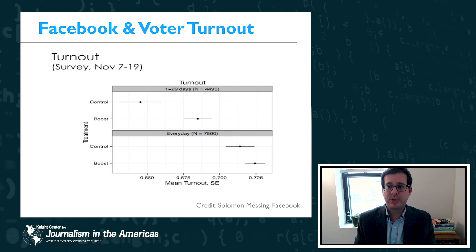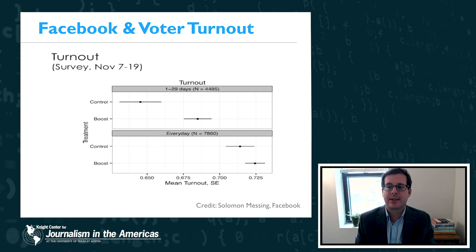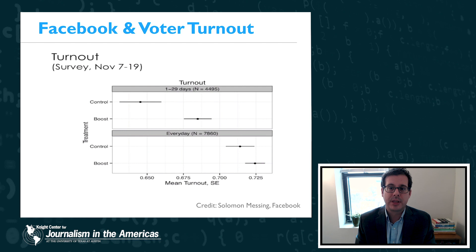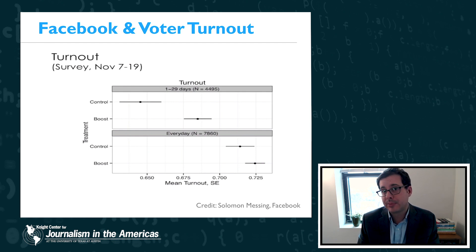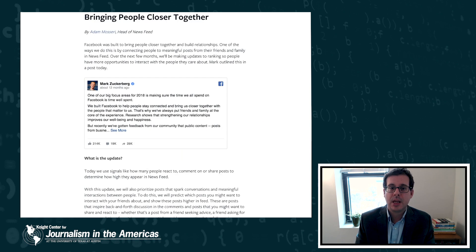In both the boost condition and the control condition, there was an increase in voter turnout that was measured. The top panel compares people who log in less frequently, and the bottom panel compares people who log in every day. But in either case, there's an increase in voter turnout. This study really shows the totally awesome power of news curation algorithms to impact democratic processes like voting, and it should make us all a little bit wary of the power that algorithms like Facebook's wield in society.